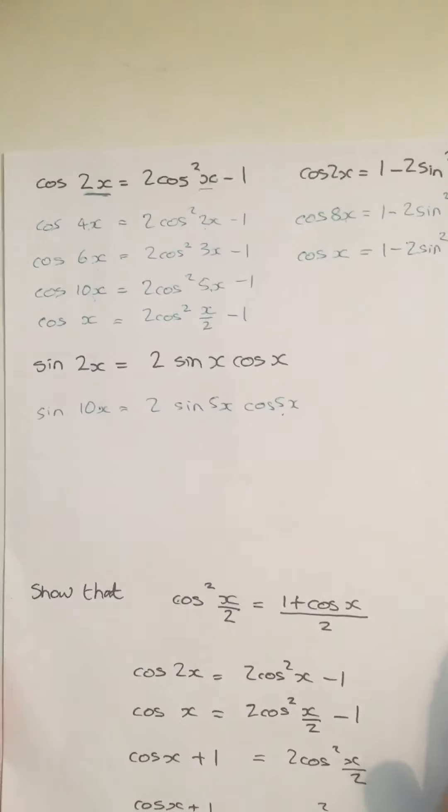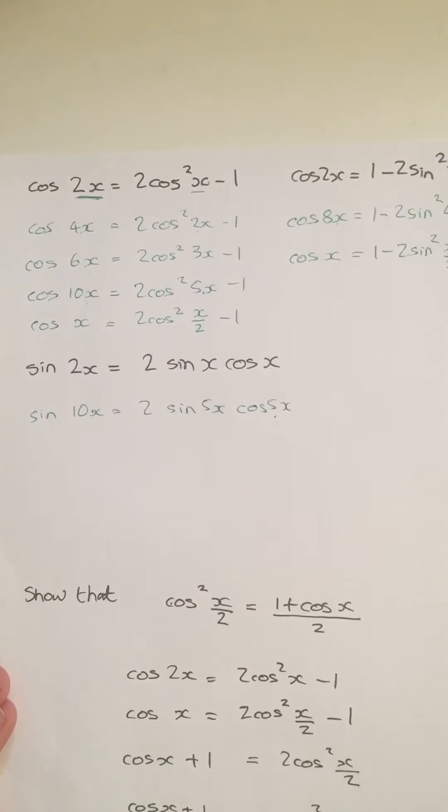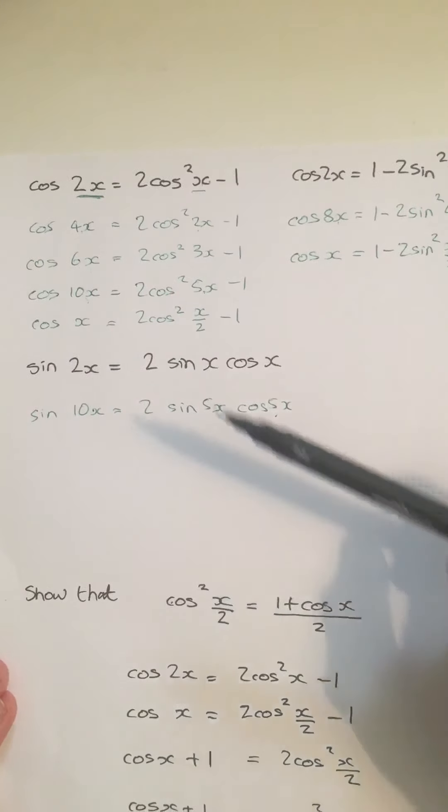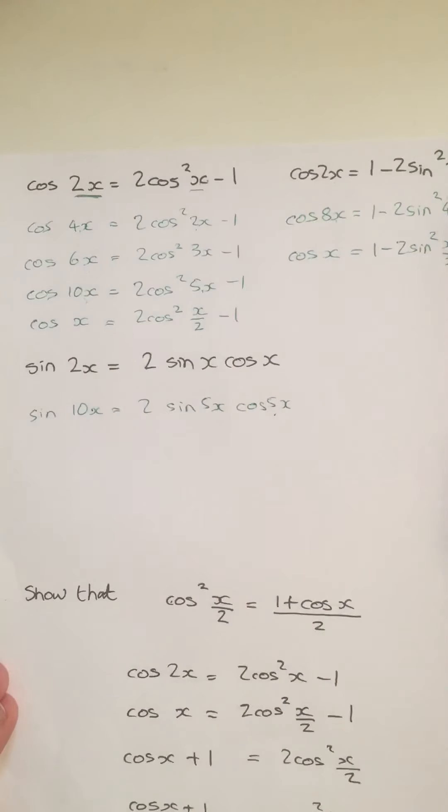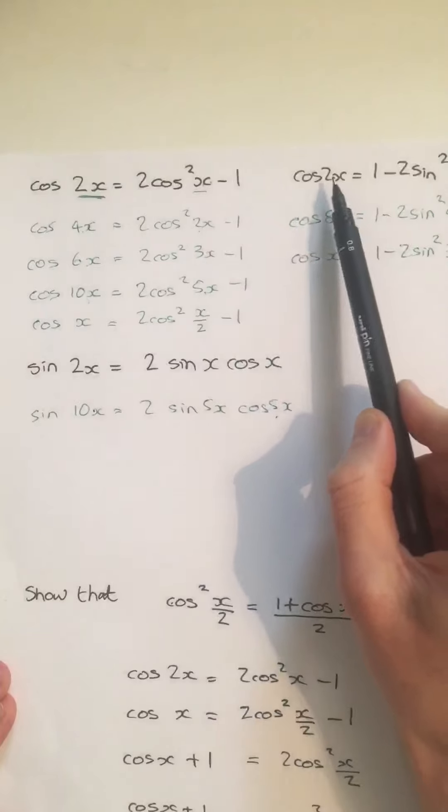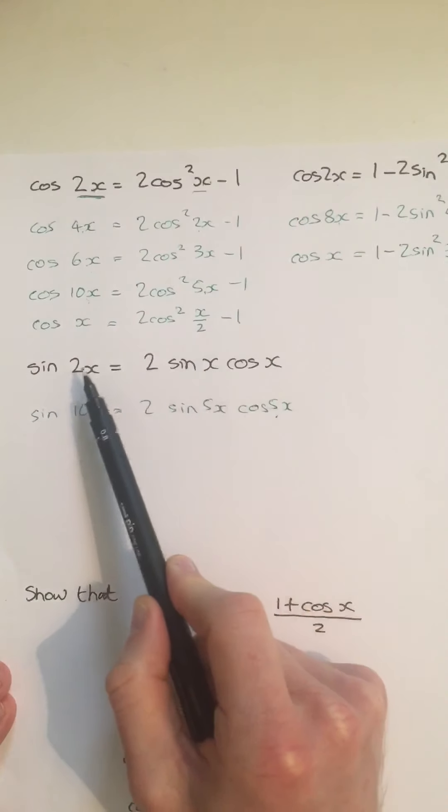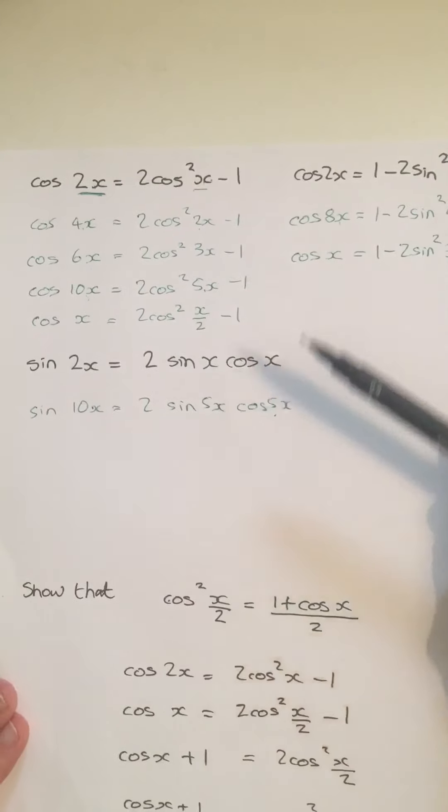So I've called this bit of the worksheet the half angle formula because it includes half angles. But really it should be about keeping these in proportion. As long as this is twice that, as long as this is twice that, as long as this is twice both of those, then we can come up with all sorts of different versions of the double angle formulae.